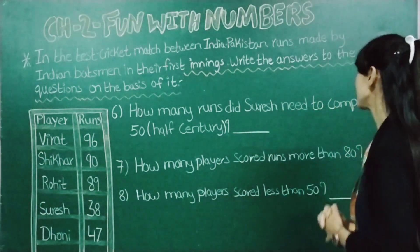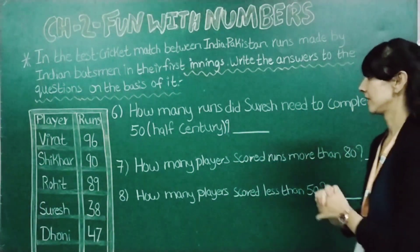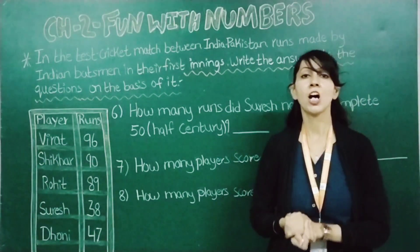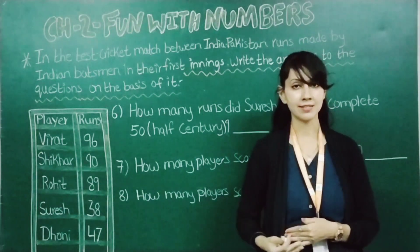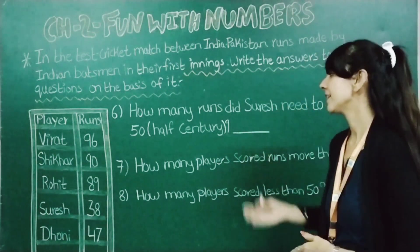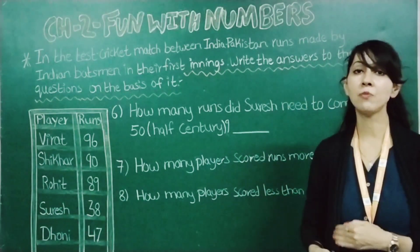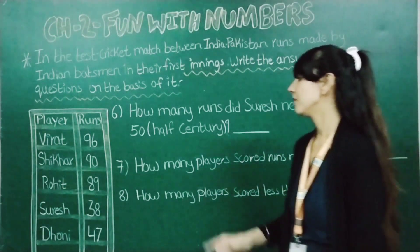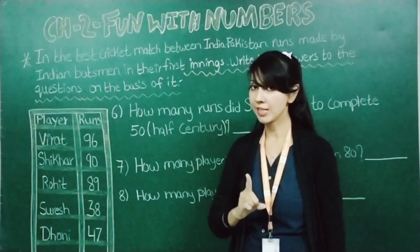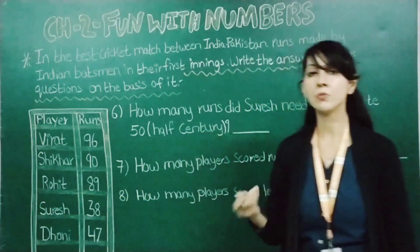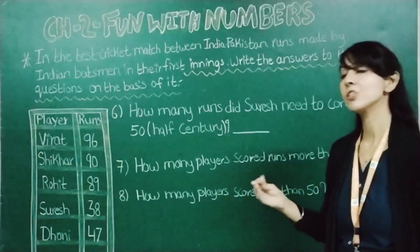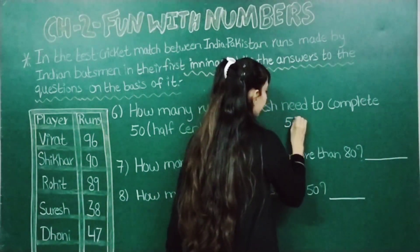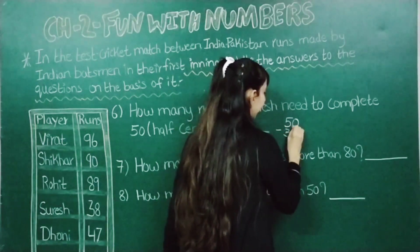Now let's move to the next question: how many runs did Suresh need to complete 50, meaning half a century? Century means 100 runs, so half is 50. We will just subtract the runs made by Suresh — 38 — from 50. So 50 minus 38 we will do.